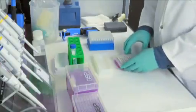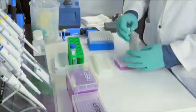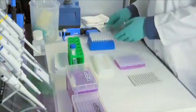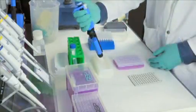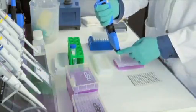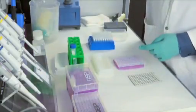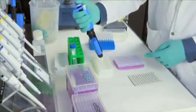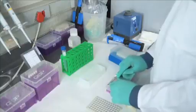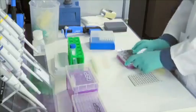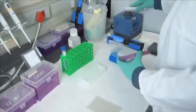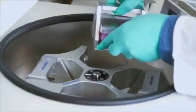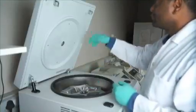For each sequencing reaction, mix 50 microliters of absolute ethanol and 5 microliters of 3 molar sodium acetate. Using a multi-channel pipette, add 55 microliters of sodium acetate ethanol solution to each well. Seal wells with adhesive foil ensuring that each well is sealed properly and vortex to mix. Centrifuge at 3000 RCF for 20 minutes.